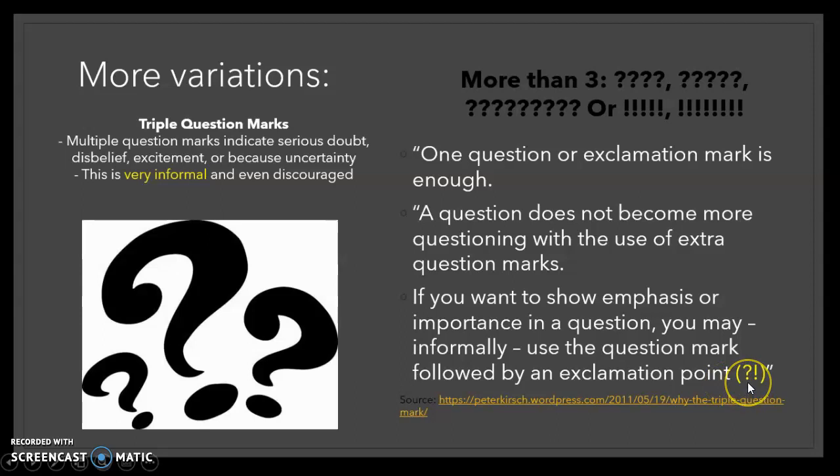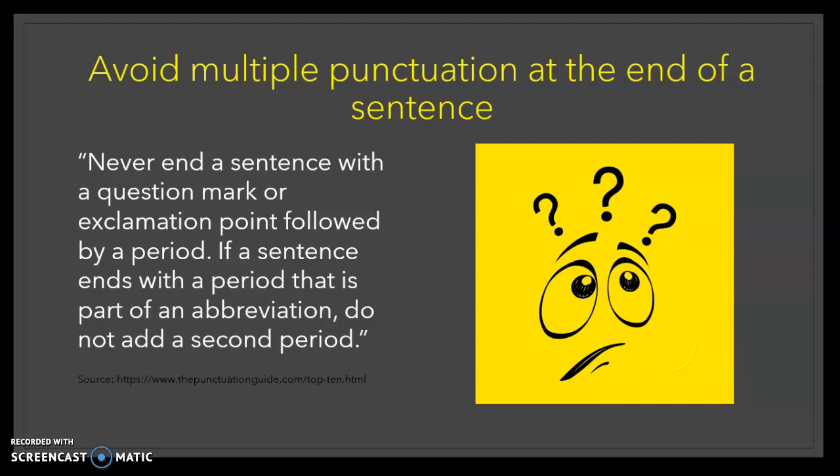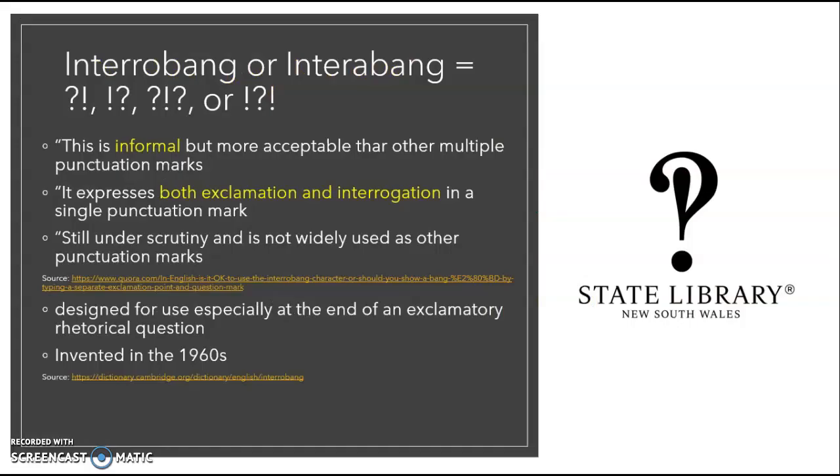One that is becoming a little bit more common these days is the exclamation mark and question mark together. And we'll talk about that, but in general you should avoid using multiple punctuation at the end of the sentence. Never end a sentence with a question mark or exclamation point followed by a period. If a sentence ends with a period that is part of an abbreviation, do not add a second period. Those are American rules.